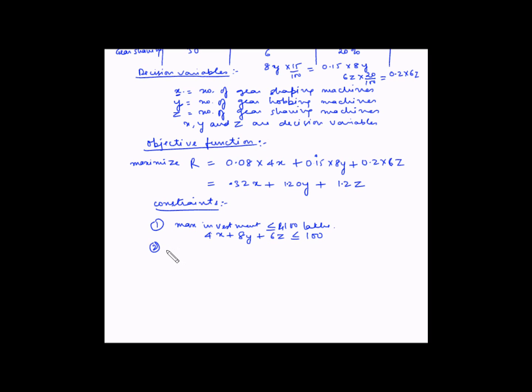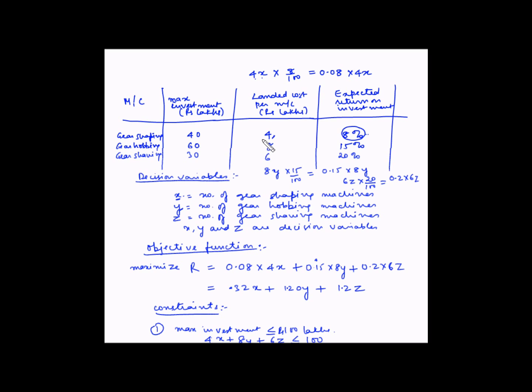The second constraint is that the investment in gear shaping machines must not exceed rupees 40 lakhs. The total investment in gear shaping machines is 4x, so the constraint is: 4x ≤ 40.